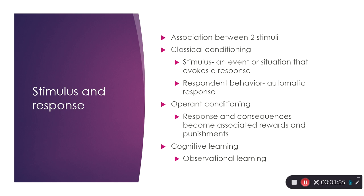Classical conditioning introduces a neutral stimulus — it can be a bell, a metronome, or me going 'ding dong dang.' The goal is to teach someone to respond to a neutral or conditioned stimulus. A stimulus is an event or situation that evokes a response. If I train you that every time you're going to eat I say 'ding dong dang,' you will then have a response by getting hungry — you've learned that 'ding dong dang' means food.